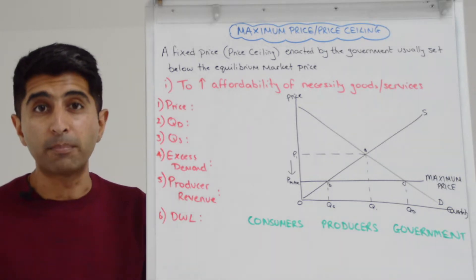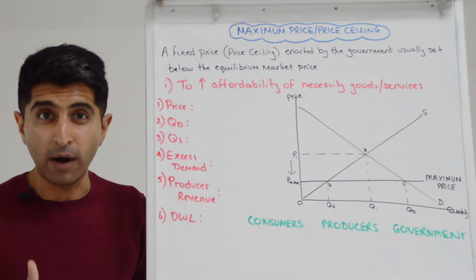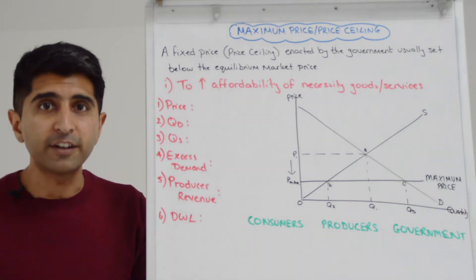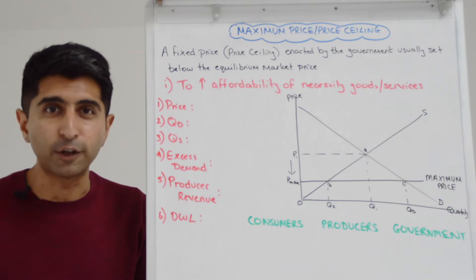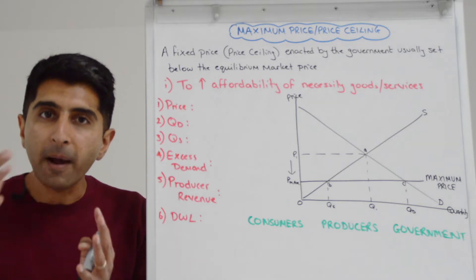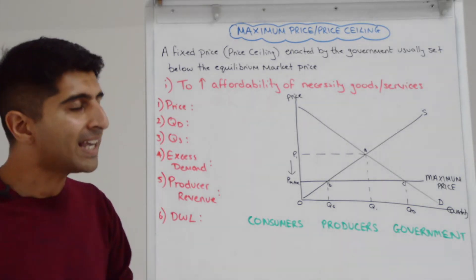In the real world you see maximum prices on rent and accommodation, rent control that's known as. You also see examples of certain governments putting maximum prices on basic groceries as well, make sure consumers can afford them. Noble intention, what about the key impacts? Is that what we see in the market?